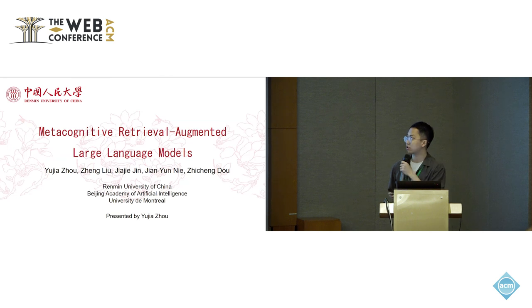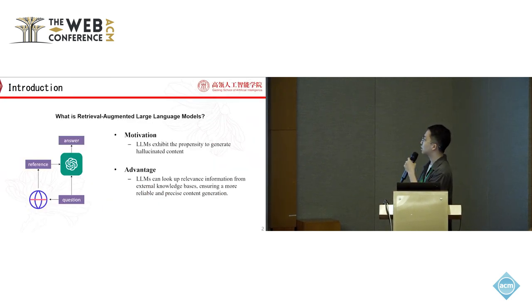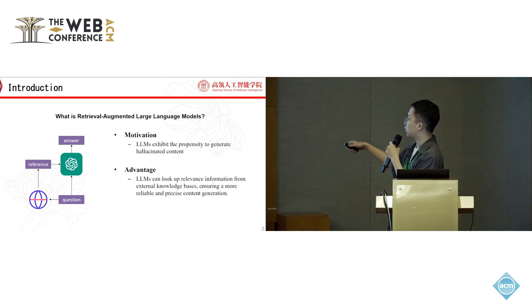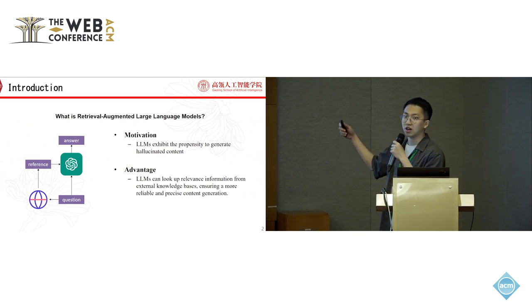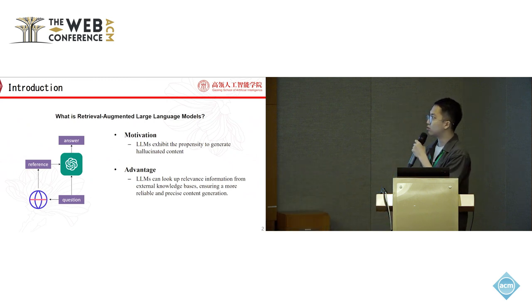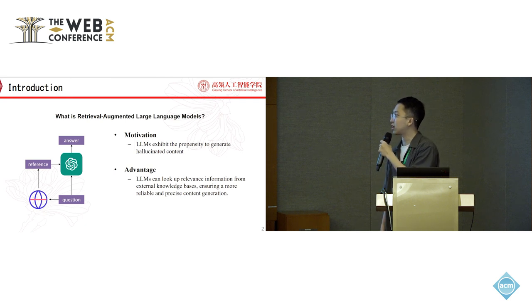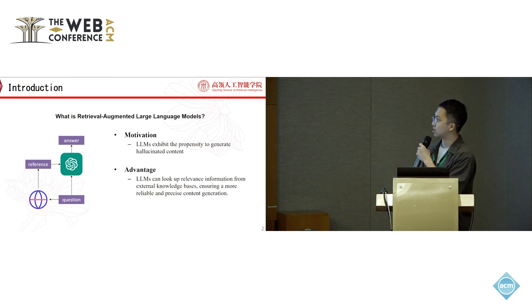Let's begin with several questions. The first is: what is retrieval augmented large language models? The left part shows the basic RAG framework. Given a question, we first retrieve some external references and then concatenate the question and references into a large language model and ask it to generate an answer. The motivation of the RAG framework is that language models often generate hallucinated content, and the advantage is that it can look up relevant information from external knowledge bases, ensuring more reliable and precise content generation.